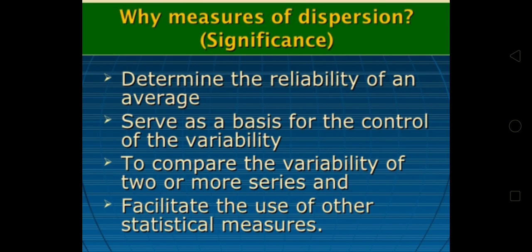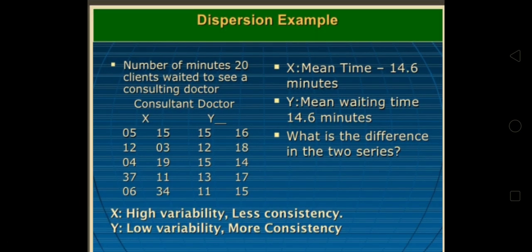It compares the variability of two or more series and it facilitates the use of other statistical measures. Example: number of minutes 20 clients waited to see a consulting doctor. X series: 5, 12, 4, 37, 6, 15, 3, 19, 11, 34.